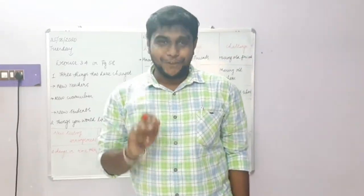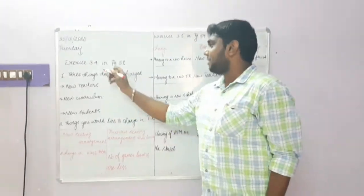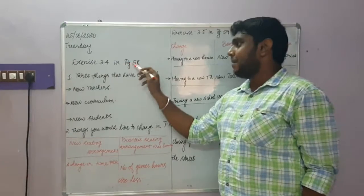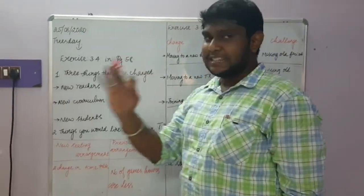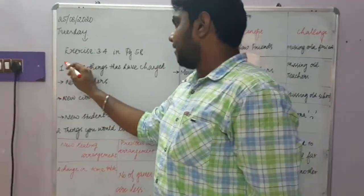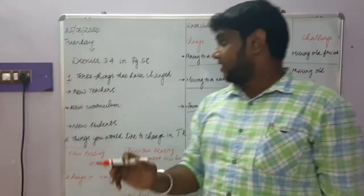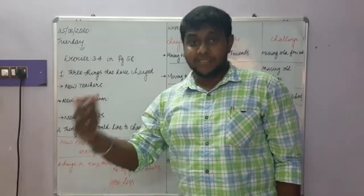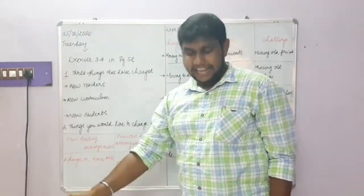In today's class, we discussed exercise 3.4 on page number 58. We started with question number 1: three things that have changed in the think room over since a year.